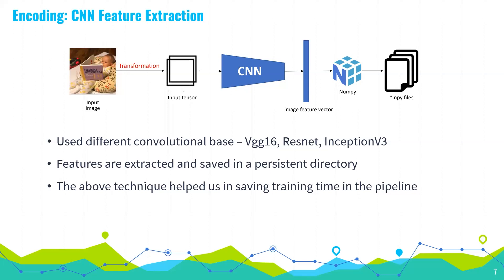We also tried InceptionV3, which is computationally efficient, has factorized convolution layers, and has 48 layers. It was used as a pre-trained model. All models have different input and output shapes, which we adapted to. Since training and feature extraction take a lot of time — Inception took over an hour — we persisted the feature vectors as serializable NumPy arrays. Then we pre-process the text corpus to produce a text vector, giving us two inputs to the decoder: the caption text vector and the image feature vector.